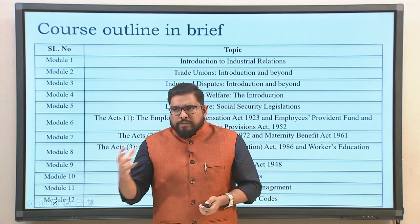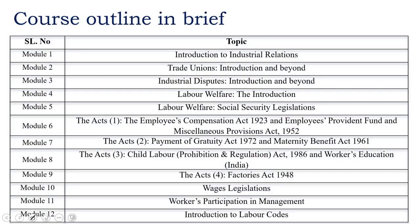Looking at the course outline briefly, the entire course is divided into 12 modules, to be covered over 30 hours. In Module 1, we'll introduce you to industrial relations. In Module 2, we'll understand the relevance and existence of trade unions and how they liaise between employers and employees. In Module 3, we'll understand industrial disputes — introducing the concept and going beyond to understand the present scenario of industrial disputes.